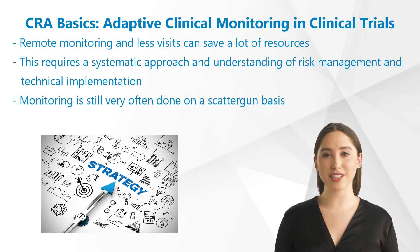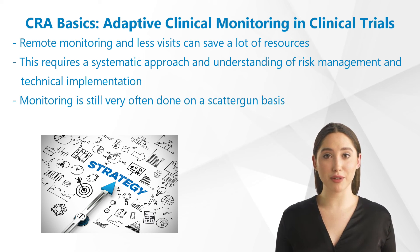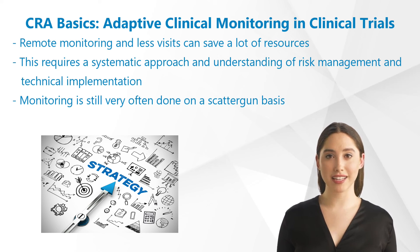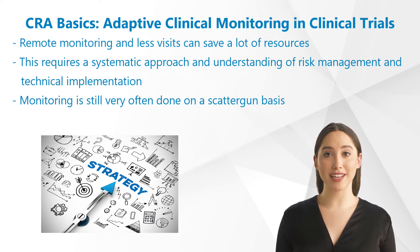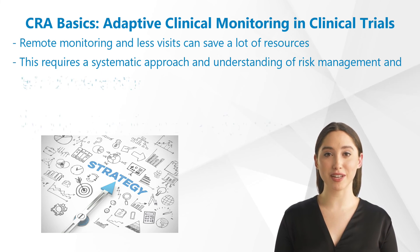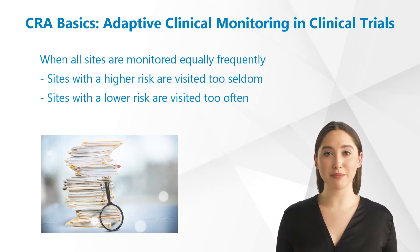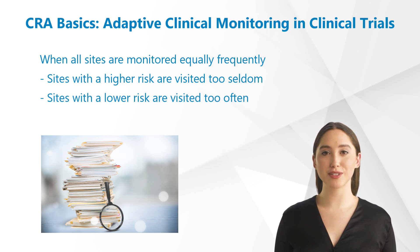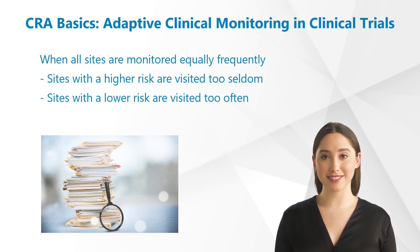This sounds logical, but it requires a certain systematic approach which includes both an understanding of risk management and technical implementation. Since these prerequisites are not yet in place among the broad mass of CROs and sponsors, monitoring is still very often done on a scattergun basis. This means that all sites are monitored equally frequently, so sites with a higher risk are visited too seldom and sites with a lower risk are visited too often, making resources used inefficiently for monitoring.